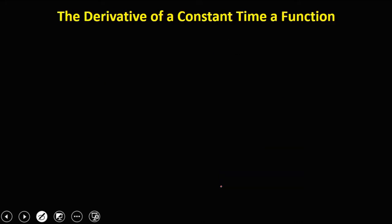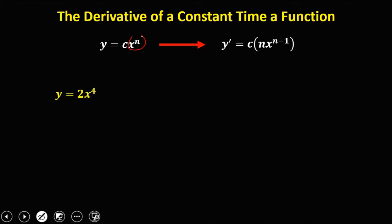For the derivative of a constant times a function, y equals c times x to the power n, the formula is: y prime equals c times the derivative of x to the power n. Given y equals 2 times x to the power 4, that's 2 times the derivative of x to the power 4. Using the power rule, the exponent becomes the numerical coefficient, minus 1 for the exponent, so y prime equals 8x to the power 3.